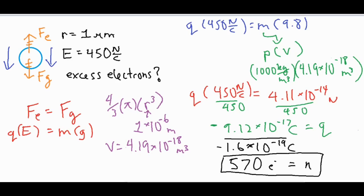Once we divided both sides by 450 we got our q value. Our q value gave us the total net charge on the water droplet, and then from there if you take the total charge divided by the individual charge of a single electron, you can find out the number of electrons that are stuck to the water droplet, the excess amount of electrons that are stuck to the water droplet, which comes out to the whole number of 570.